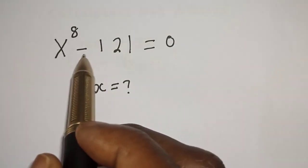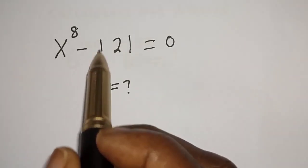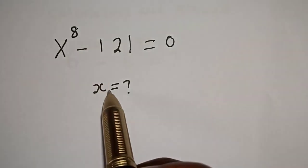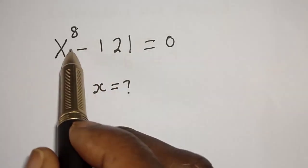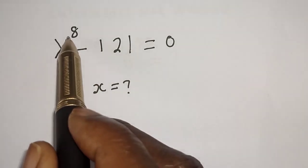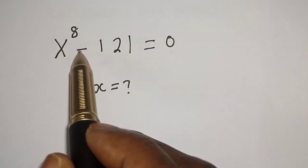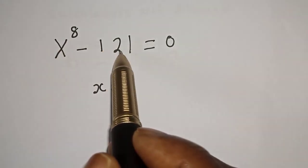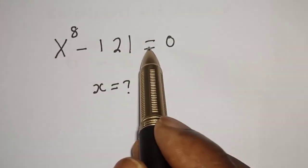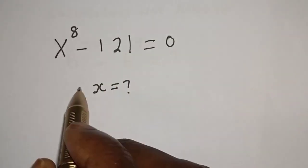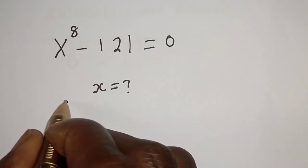Hello, welcome to MathFocus. How to find the value of s from this equation: s raised to power 8 minus 121 is equal to 0. Solution.